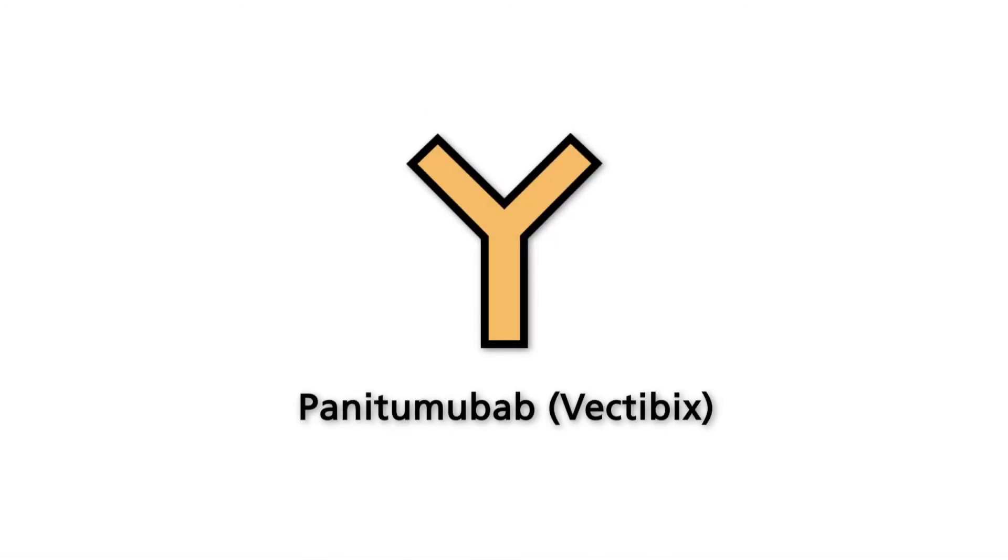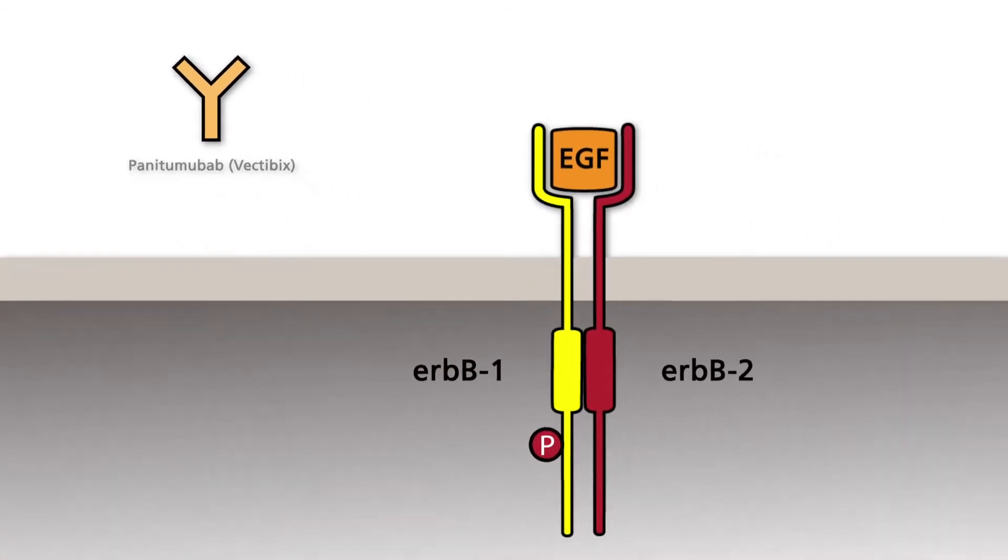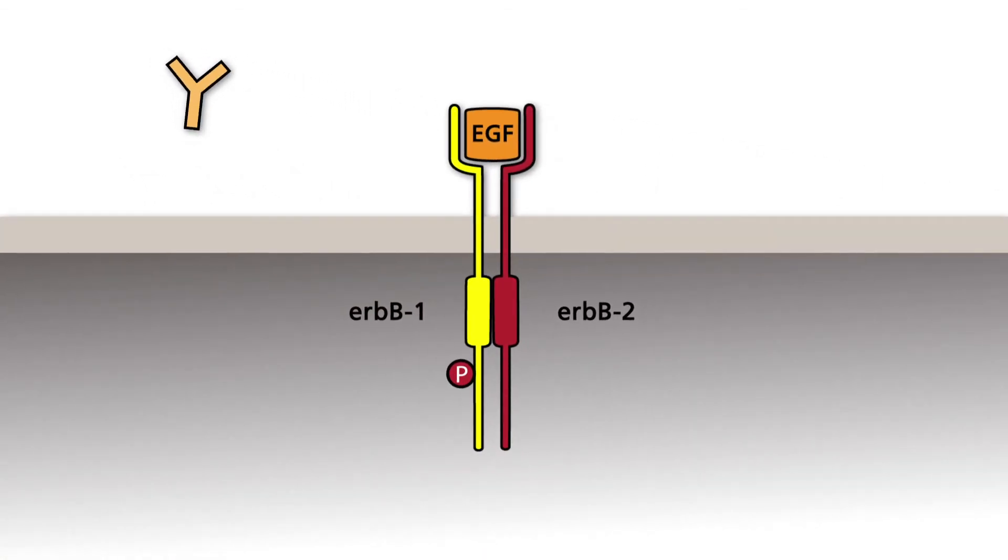The antibody Panetumumab, registered trademark Vectibix, binds to an antigenic site within the extracellular domain of the EGF receptor ERB-B1 and inhibits the activation of the receptor after binding of the ligand and heterodimerization.